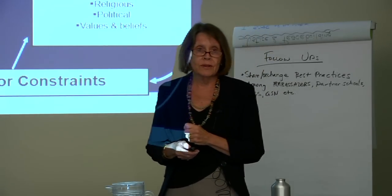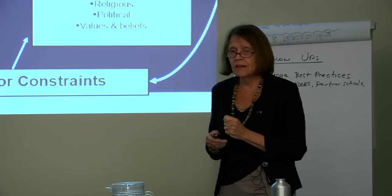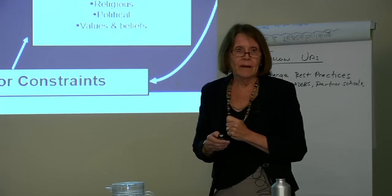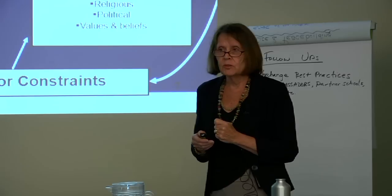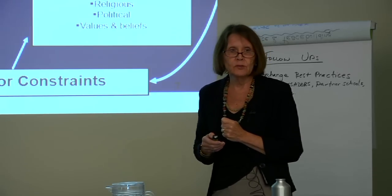So here's the framework. What does it mean? We have a series of different points that are critical. The one we're going to talk about more in depth today is the issue of assets, because assets look at all six aspects: the spiritual, the social, political, financial, natural, and physical. I just came from an area where the physical and the natural have extremely influenced what CRS needs to be doing in a context like a drought-stricken Ethiopia.